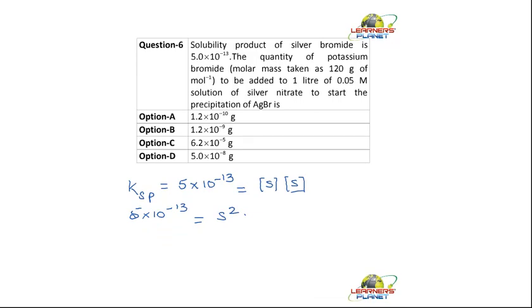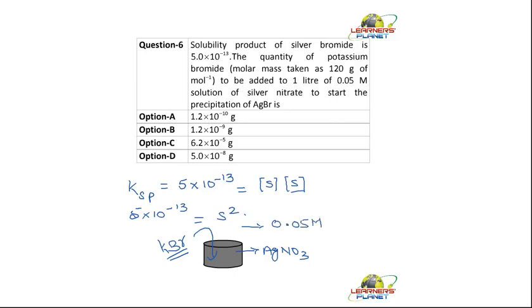What is being done in this question is that there is a solution of silver nitrate, and what is being poured into it is KBr. The silver nitrate solution is 0.05 molar. So how much of potassium bromide should be added to this solution so that silver bromide is precipitated?